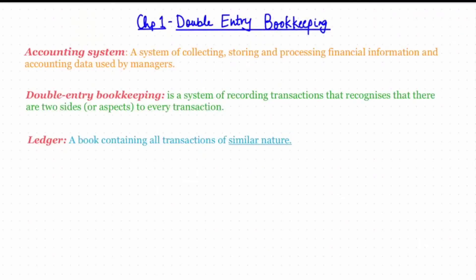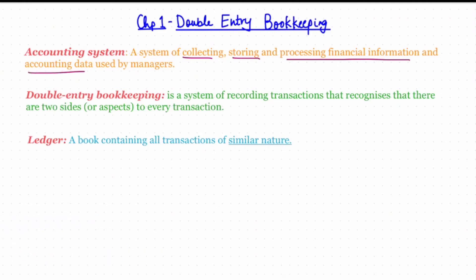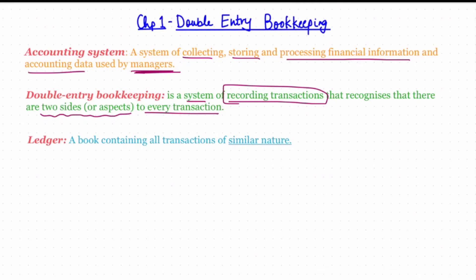Our first chapter is double entry bookkeeping. An accounting system collects, stores, and processes financial information and accounting data used by managers. One of the most fundamental principles in accounts is double entry bookkeeping — it is a system of recording accounting transactions that recognizes there are two sides to every transaction. For example, you buy a watch: what comes in is the watch, and what goes out is the cash. Both sides have to be recorded in terms of debit and credit effect.